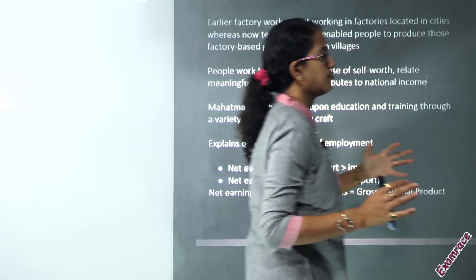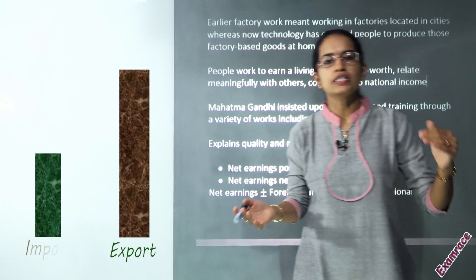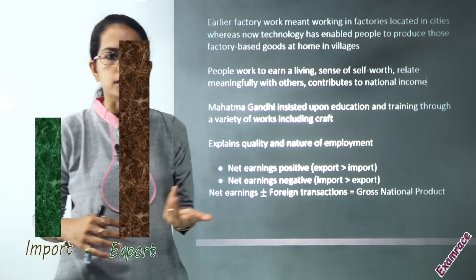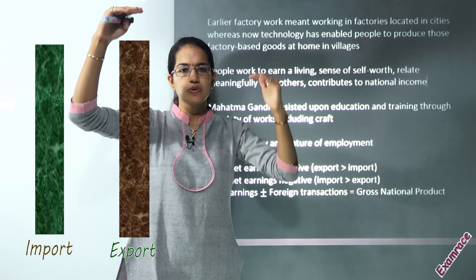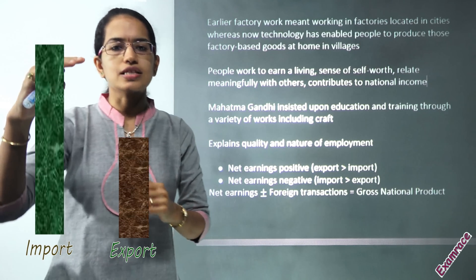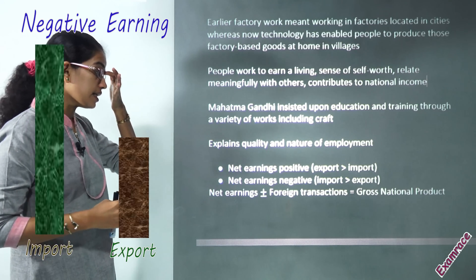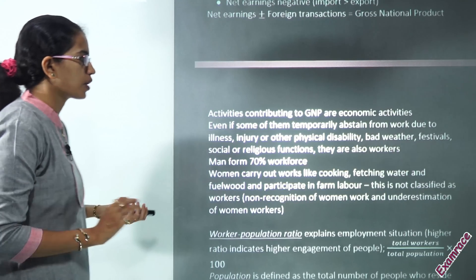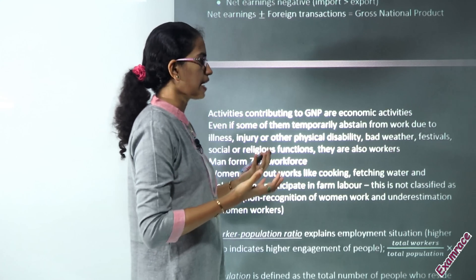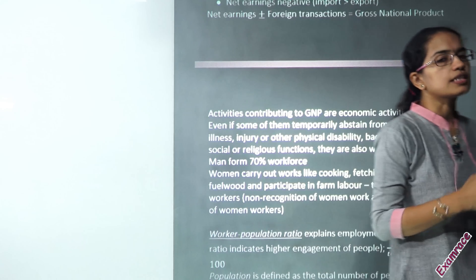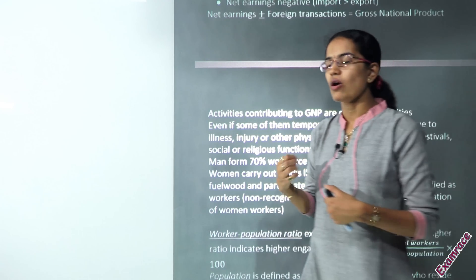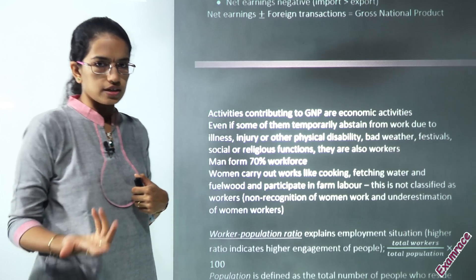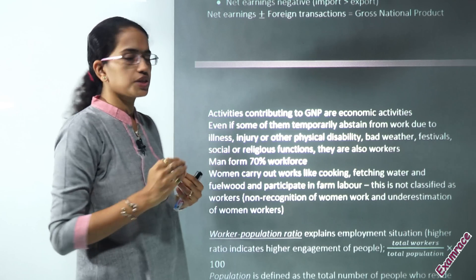If we talk about the nation, we have exports and imports. If exports are higher than imports, we have a net earning which is positive. However, if imports are more and exports are less, we have a net earning that is negative. The net earning along with foreign transactions gives you the Gross National Product, which basically talks about economic activities. Even if a person is temporarily disabled or ill, he is contributing something to the economy, though the overall contribution would decline.